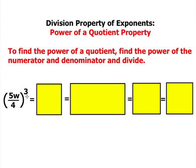So what you're going to do is find the power of the numerator and find the power of the denominator, which is now 5w cubed divided by 4 cubed.